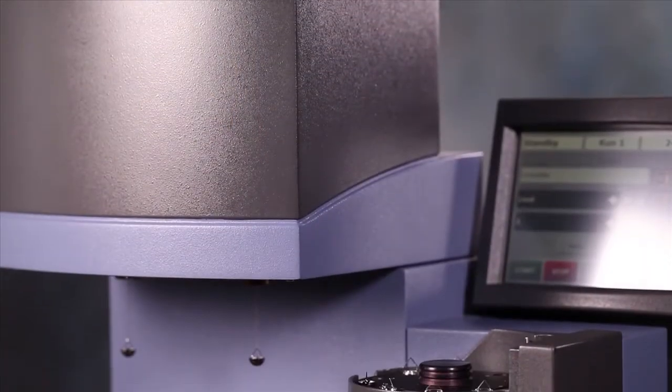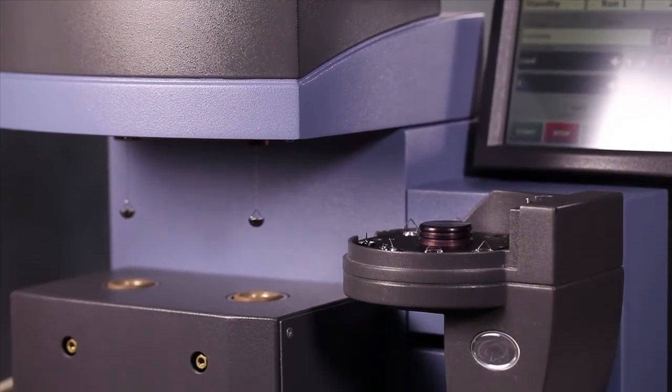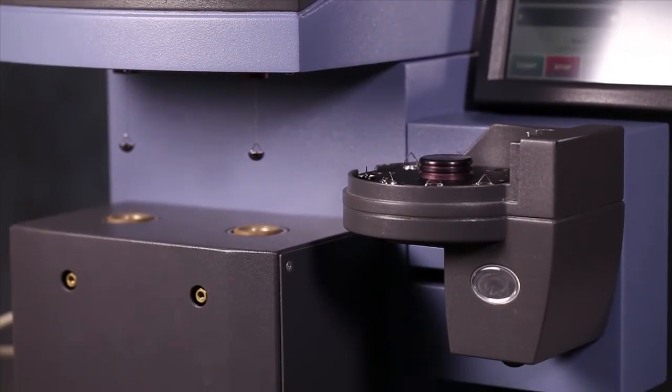A variety of experiments can be performed. A typical sorption experiment includes holding temperature isothermal or constant, and then varying humidity by stepping humidity in increments. Multiple sorption and desorption cycles can be performed.